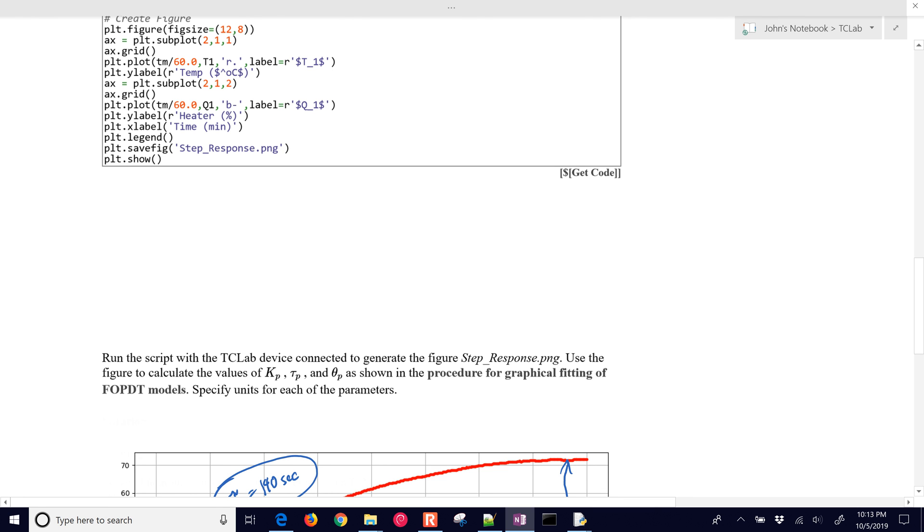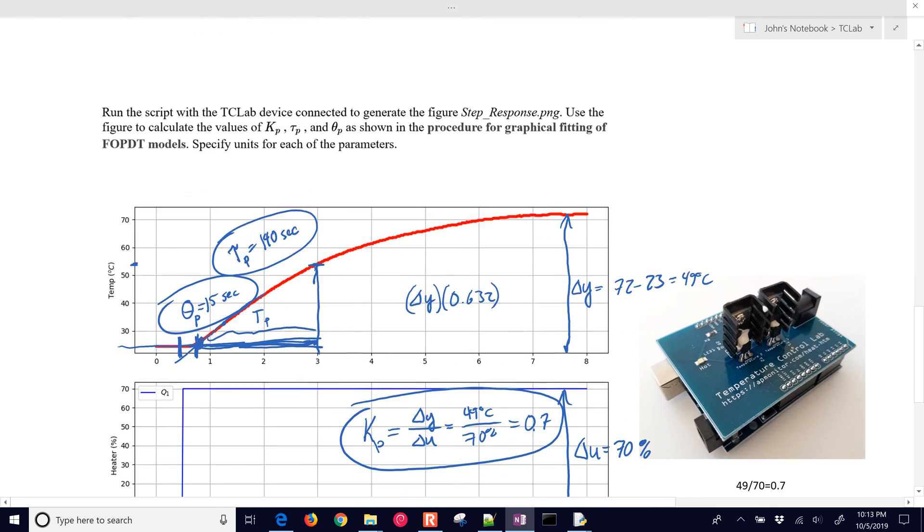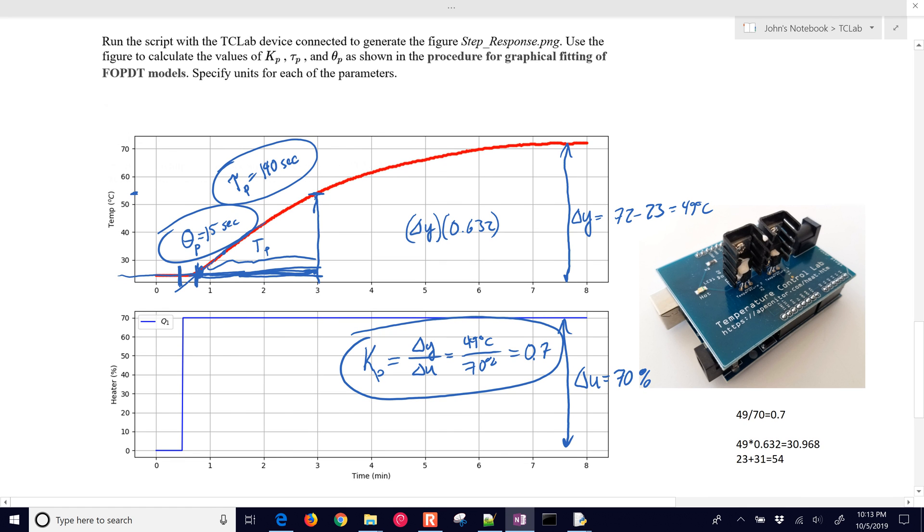The next thing that we're going to do is use regression to get these as well. Let me just review that briefly. So if we don't have a step input, let's say we had something like this or a doublet test, which is up, down, and then back to the nominal value, that would be called a doublet test. Some of this, the graphical fitting method doesn't work as well. It doesn't work, in fact.